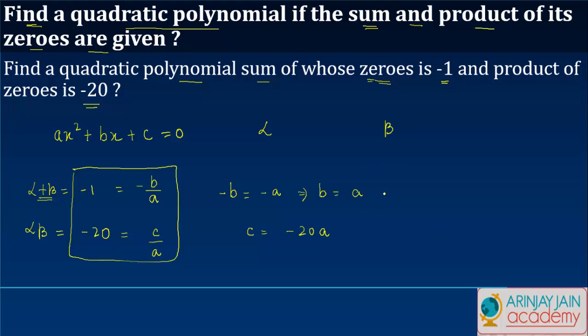Or in other words if we assume the value of a as equal to 1, then we get b is equal to 1 and c is equal to minus 20.